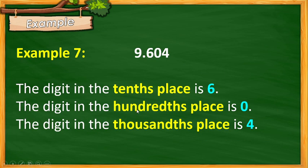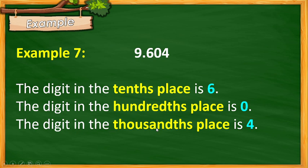Example number 7: We have 9 and 6004 ten-thousandths. The first digit to the right of the decimal point is 6 — this is the tenths place. The second digit to the right is the hundredths place, which is 0. The third digit is the thousandths place, so counting 1, 2, 3 — therefore we have 4 as the digit in the thousandths place.